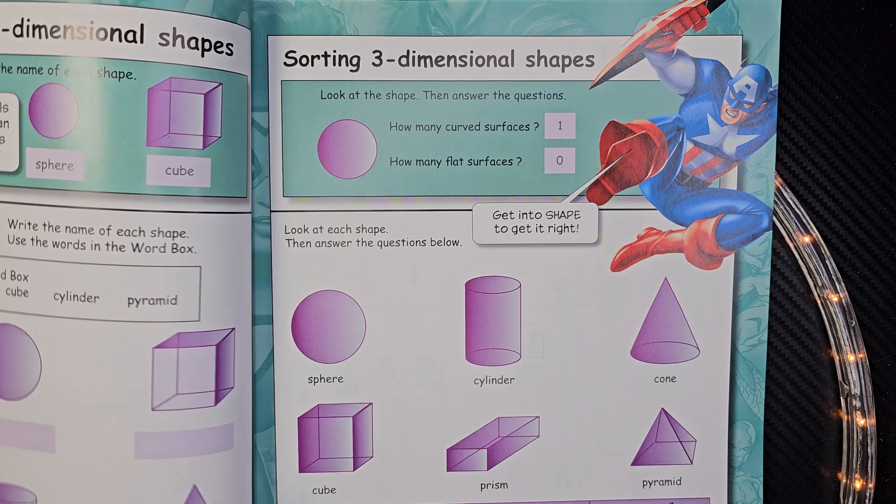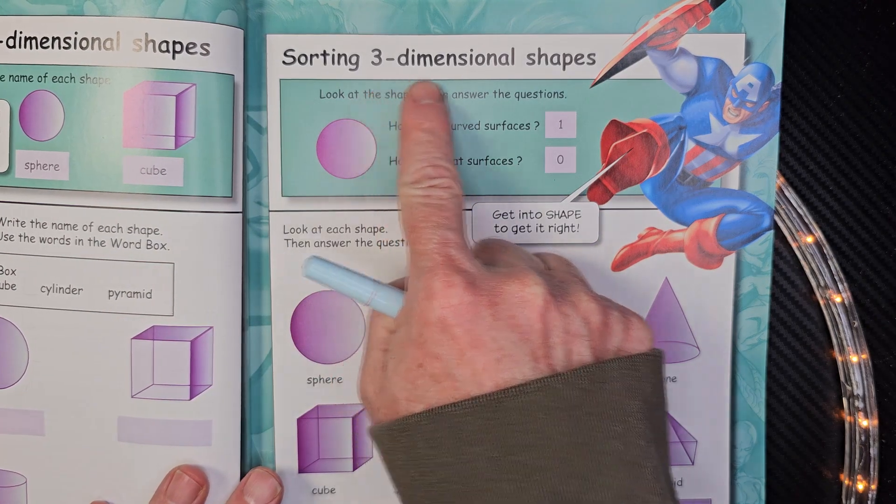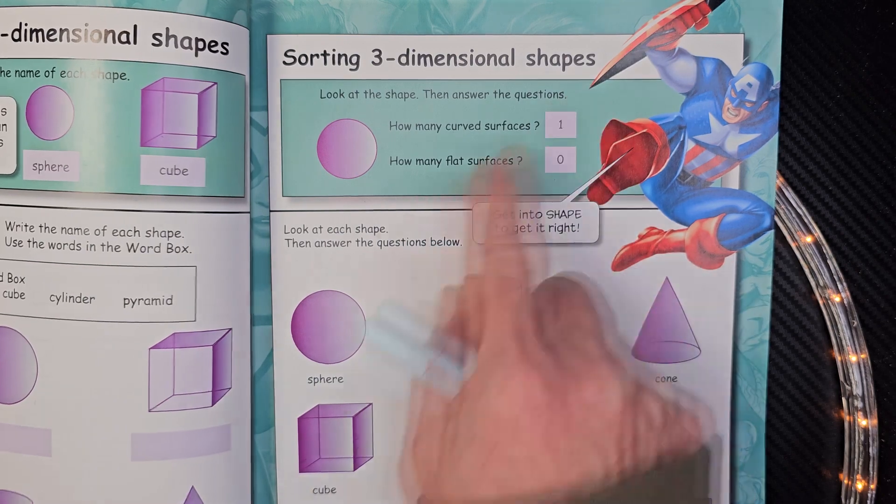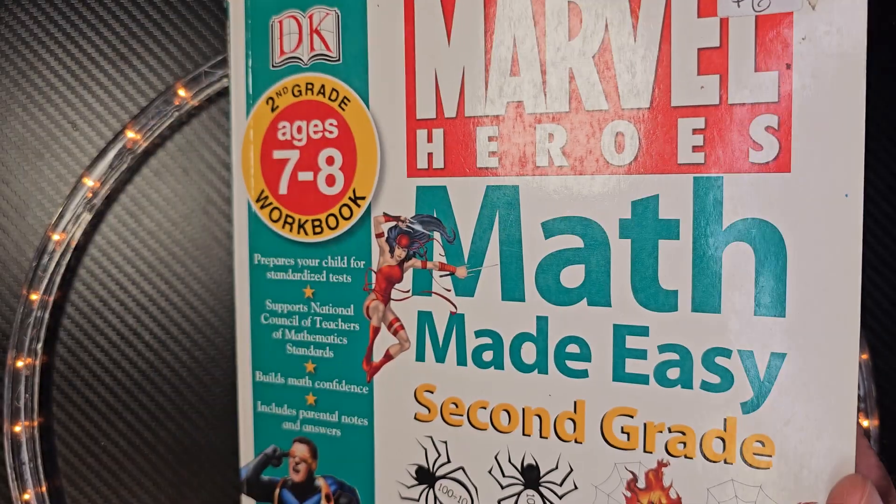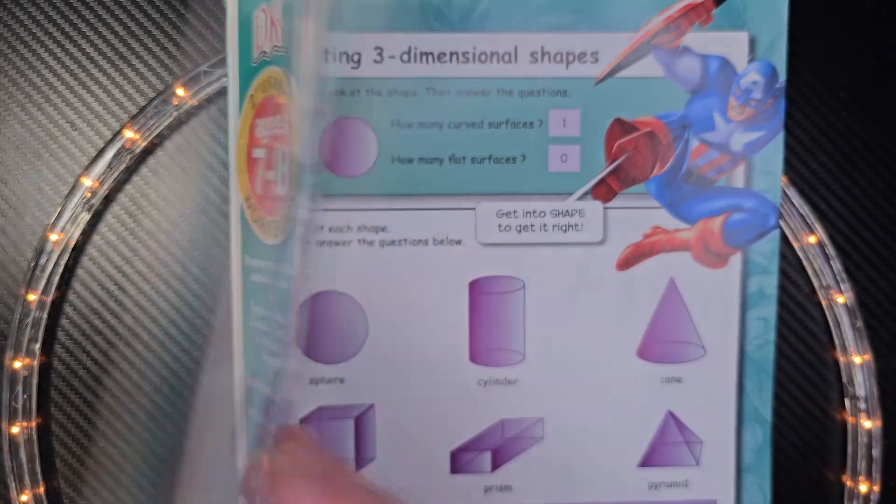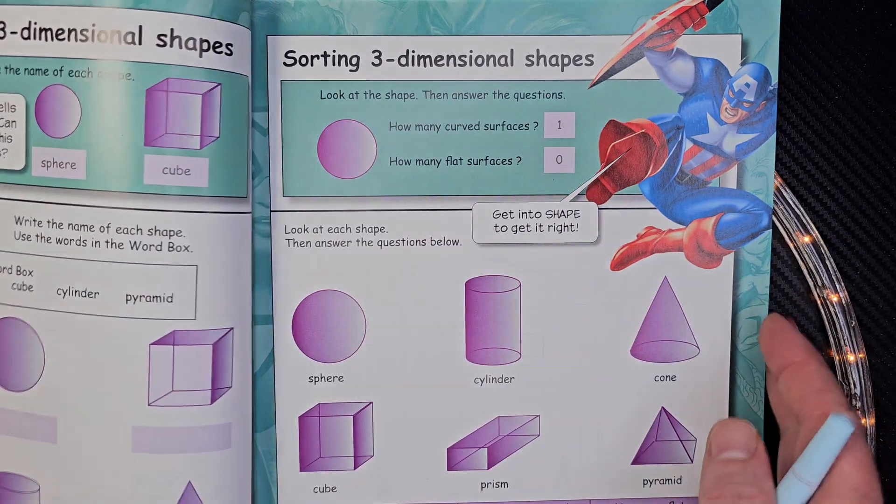Hey, welcome to the show. Today we're going to talk about sorting three-dimensional shapes. We are using the book, Marvel Heroes, Math Made Easy. Alright, let's go ahead and take a look at this.